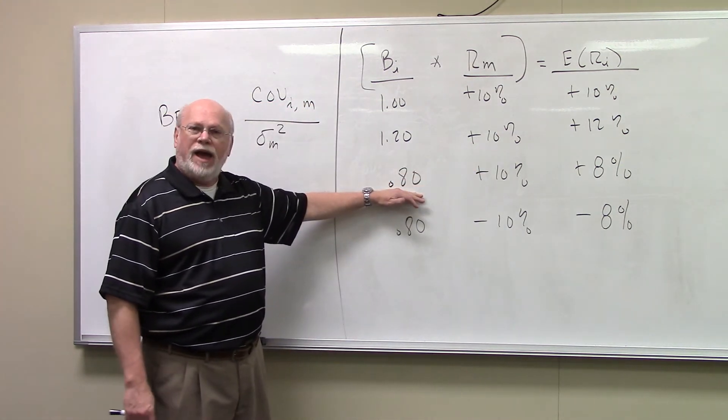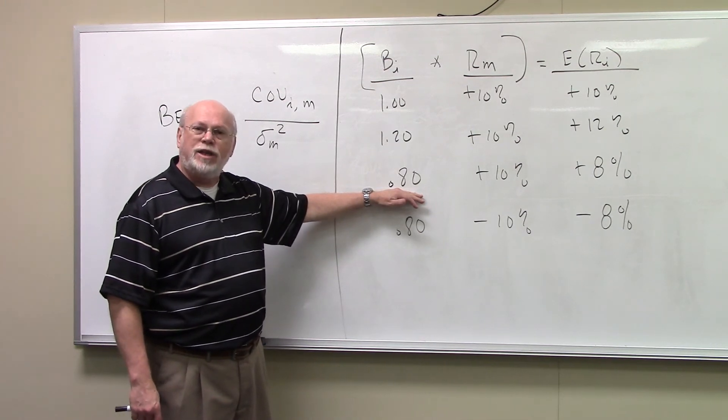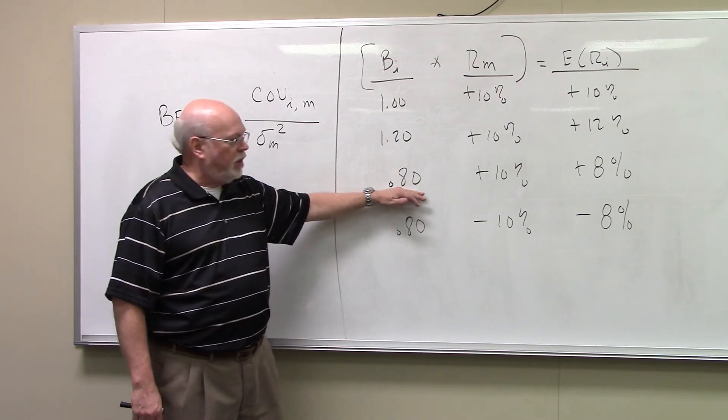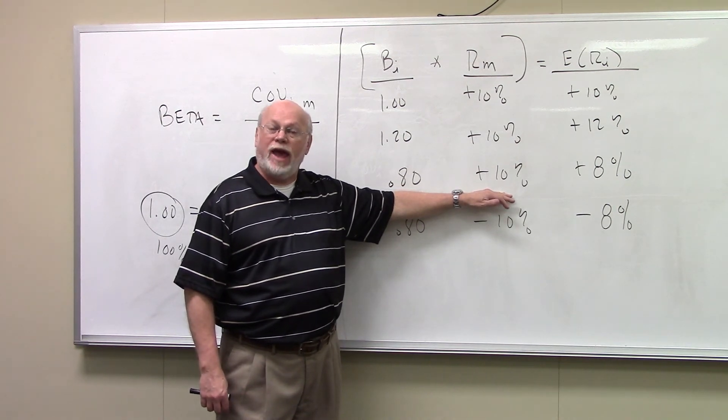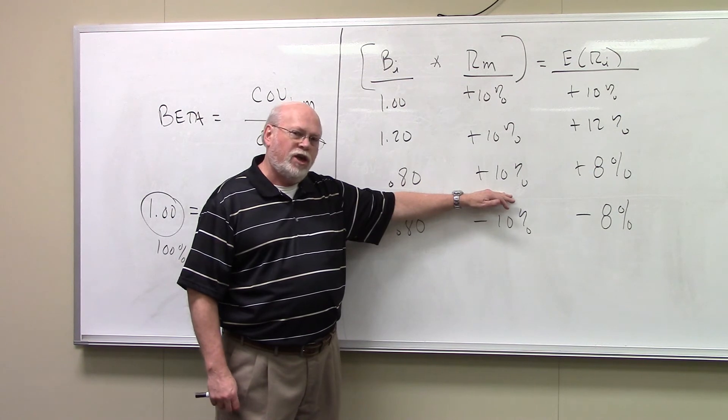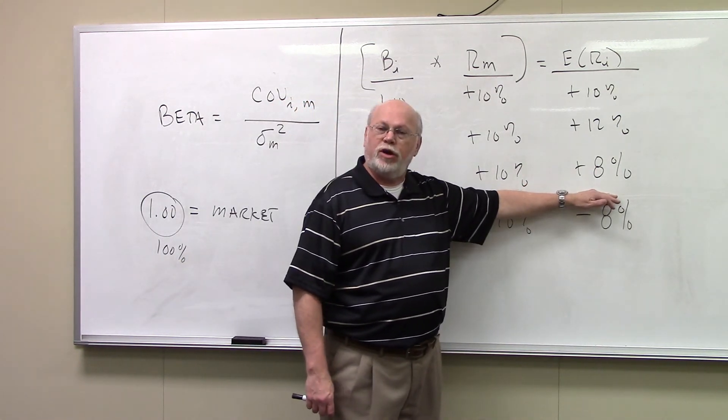If my asset, my portfolio has a beta of 0.8, I'm only taking on 80% of the risk of the market. So if the market goes up 10%, I only expect to earn 80% of that return, because I'm only taking on 80% of the market's risk. I should expect a return of 8%.